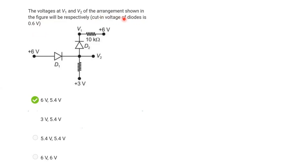The cut-in voltage of a diode means the forward bias potential drop. Now, for forward bias, the P-type of the diode must be at a higher potential and N-type at a lower potential. If the N-type is at higher potential and P-type at lower potential, it is reverse bias.